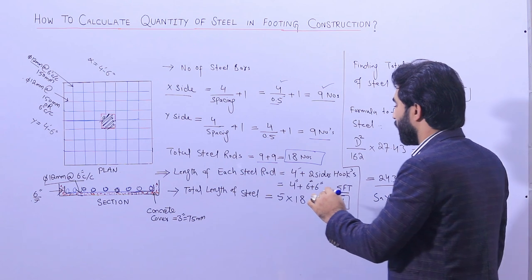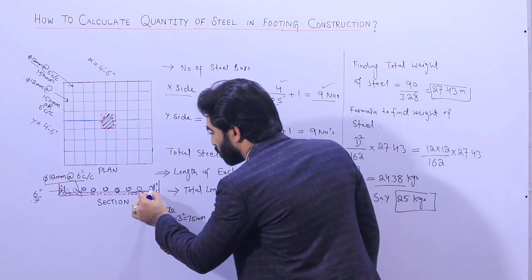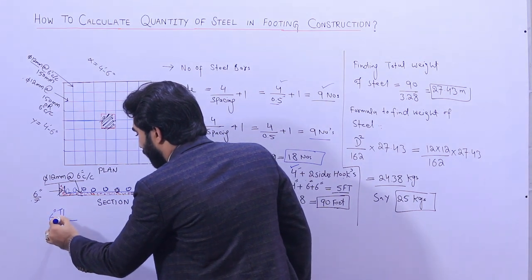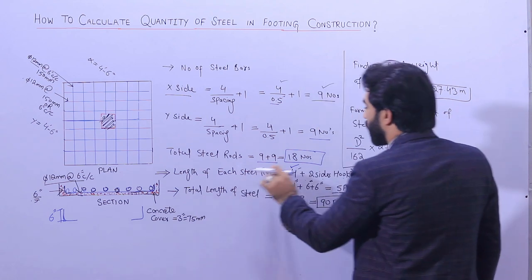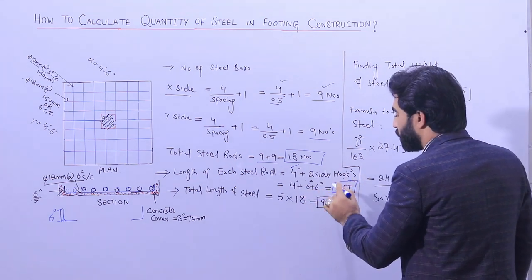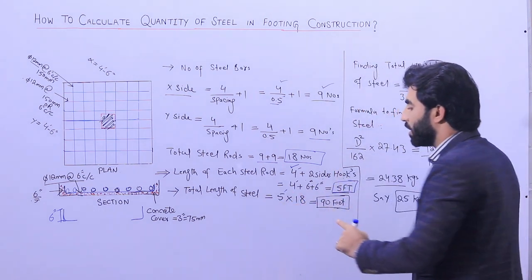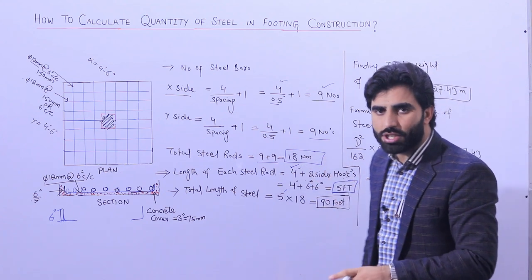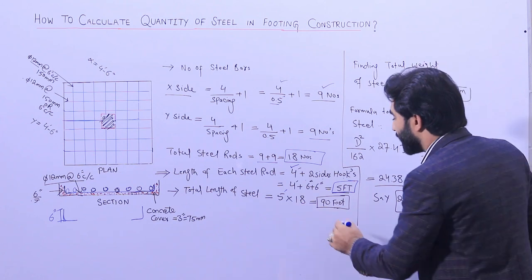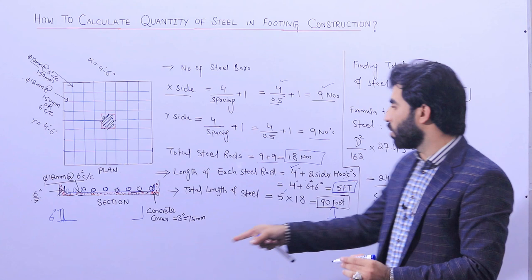Now let me find the length of each steel rod. The mesh length is 4 feet, and on each end there is a hook of 6 inches. So the length of each steel rod is: 4 feet + 6 inches + 6 inches = 5 feet per bar (including hooks). Therefore, the total length of steel is 5 feet × 18 bars = 90 feet. This is the total steel required to construct the reinforcement mesh for this footing.